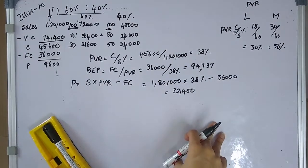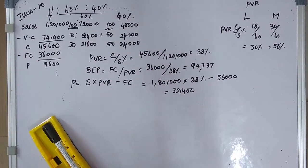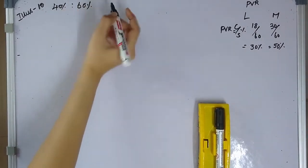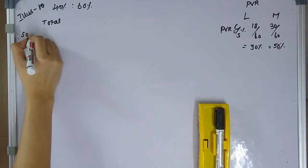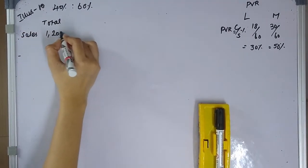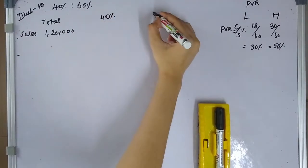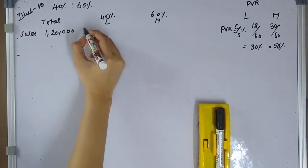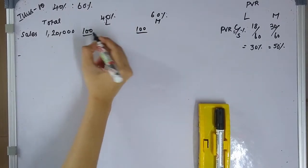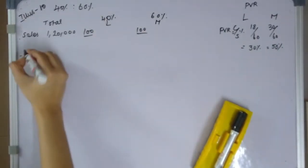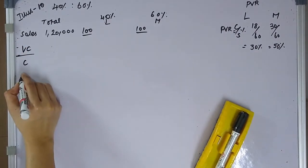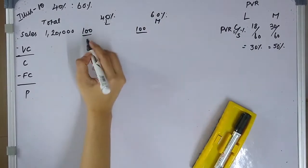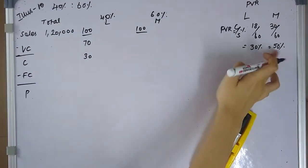Now the second sales mixture: 40% to Product L and 60% to Product M. Product L PVR is 30%, so variable cost is 70%, contribution is 30%. Product M PVR is 50%, so variable cost is 50%, contribution is 50%.